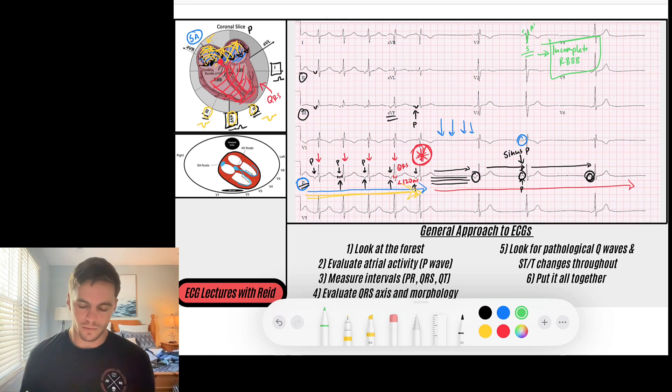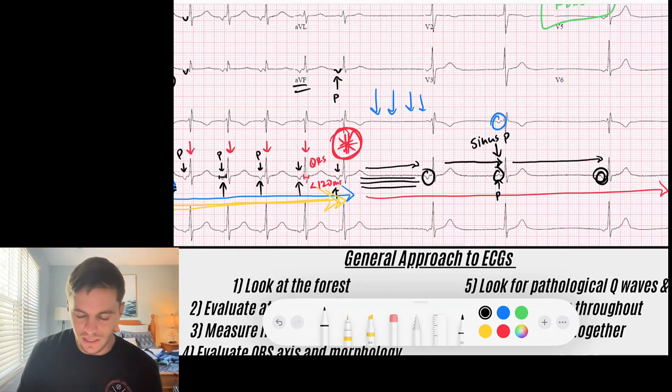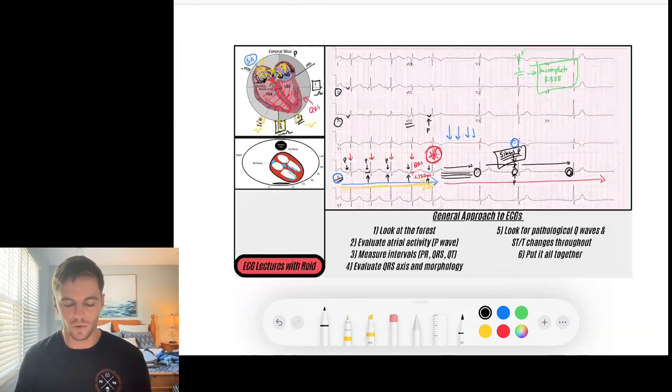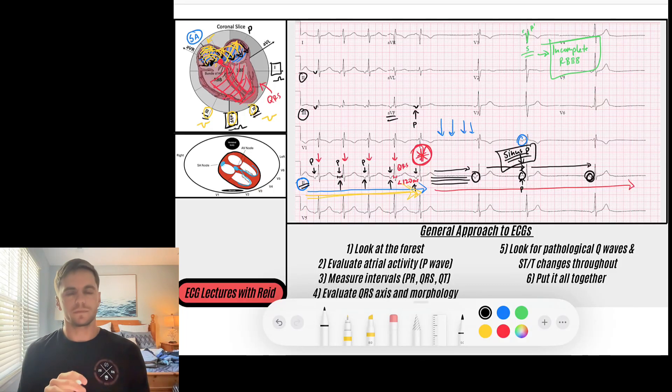And so what do we get here? We have an ectopic atrial rhythm that then breaks with evidence of what I would almost say is a sick sinus syndrome where we only really get one sinus P wave. So moral of the story: every single rhythm that you see, you need to evaluate the morphology of those P waves and make sure you understand exactly where they're coming from.